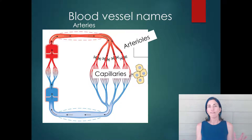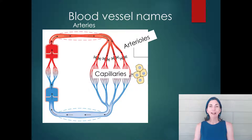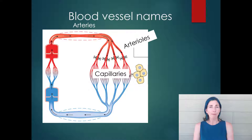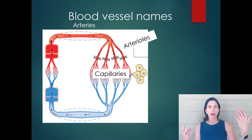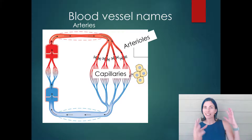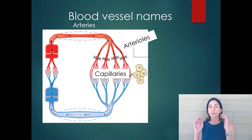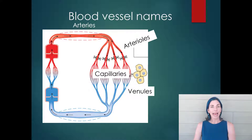When people talk about blood vessels, they tend to focus on arteries and veins, but capillaries are actually where it's at — where all the exciting stuff happens. The appropriate lens for the cardiovascular system really starts with the capillaries, because capillaries are where all the exchange between plasma and interstitial fluid occurs: oxygen, CO2, nutrients, waste products, water, heat, etc. Everything else is just about getting blood to the capillaries and back to the heart. As blood leaves the capillaries, it enters larger vessels called venules, which then funnel into even larger vessels known as veins.